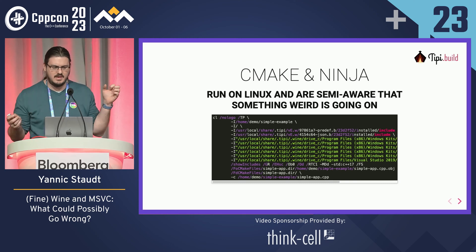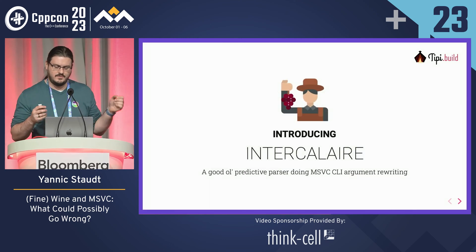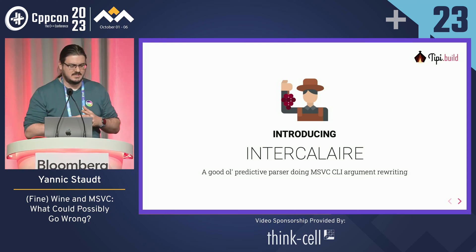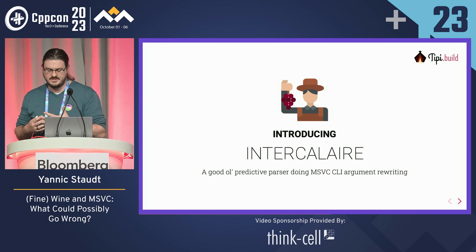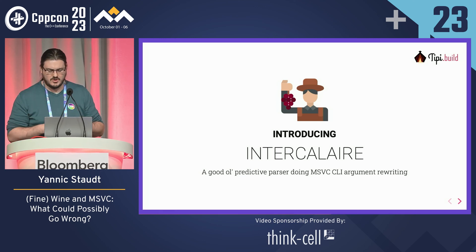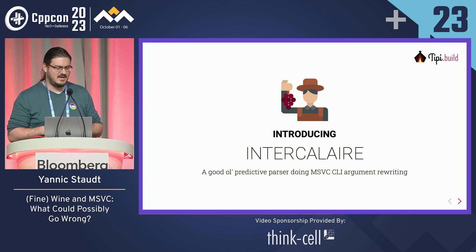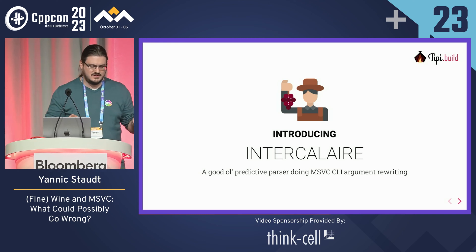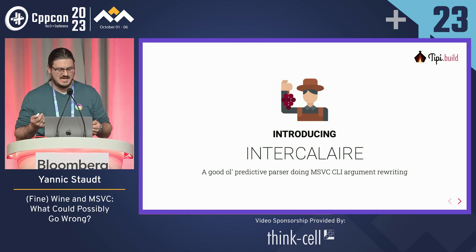So we had kind of two possibilities: take CMake and hammer it to make it do what we wanted, or build a smaller layer that we named intercalaire, which is a French word for shim basically. This one is a good old predictive parser which takes command line arguments and fixes them until they look like something MSVC can handle.